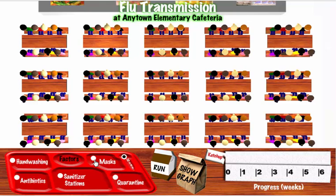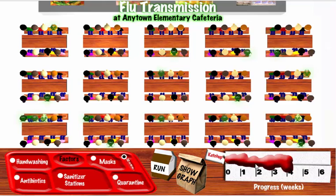In this case, I will choose the None option, which means that no preventative measure is being taken to curb the spread of the flu. After you have chosen a factor, click on the Run option on the milk carton. The ketchup packet will spill onto the napkin to show how long the flu has been spreading.